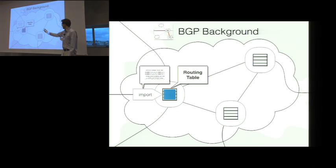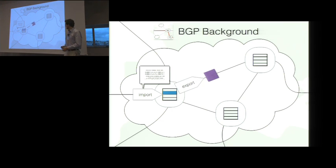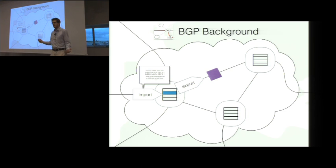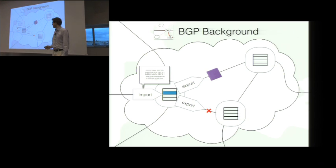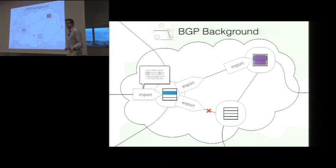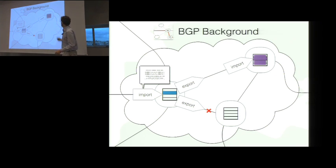ISP administrators can write arbitrary functions in these import filters, which take the received announcement and then either modify the announcement or drop it. In this case it has been modified, indicated by the different color, and this modified announcement is stored in the routing table. Once stored, we also export the announcement to all of our neighbors. This export filter can either modify the announcement or drop it, indicated by the little x here.